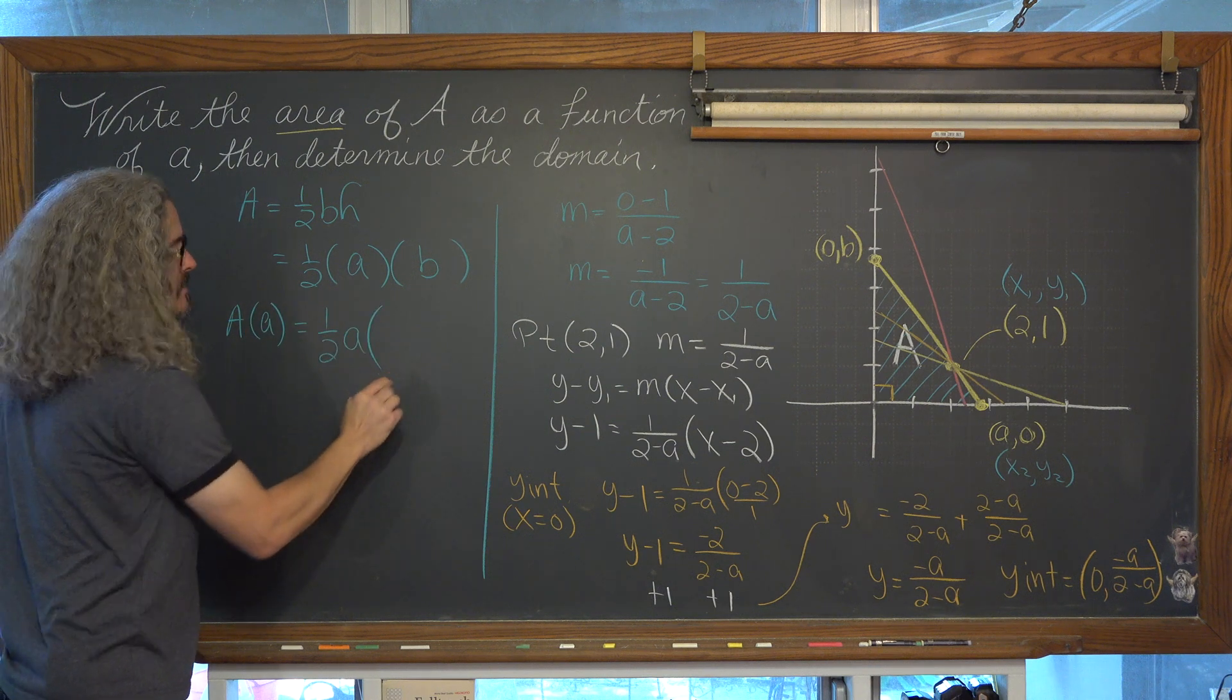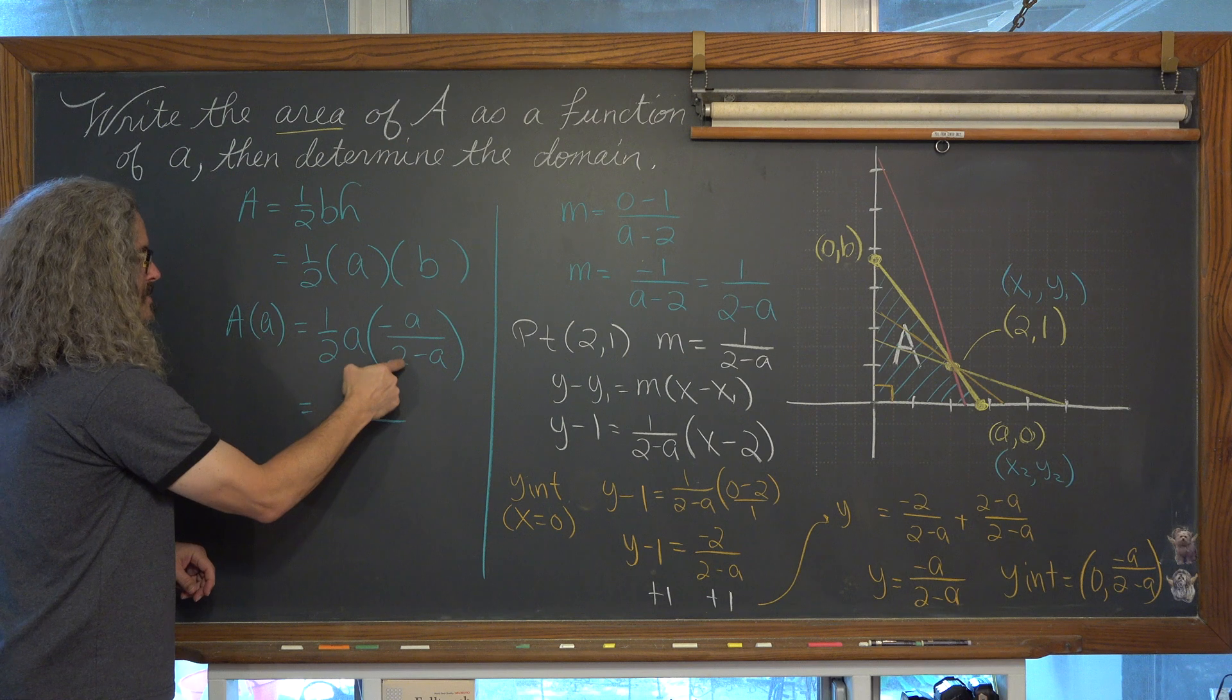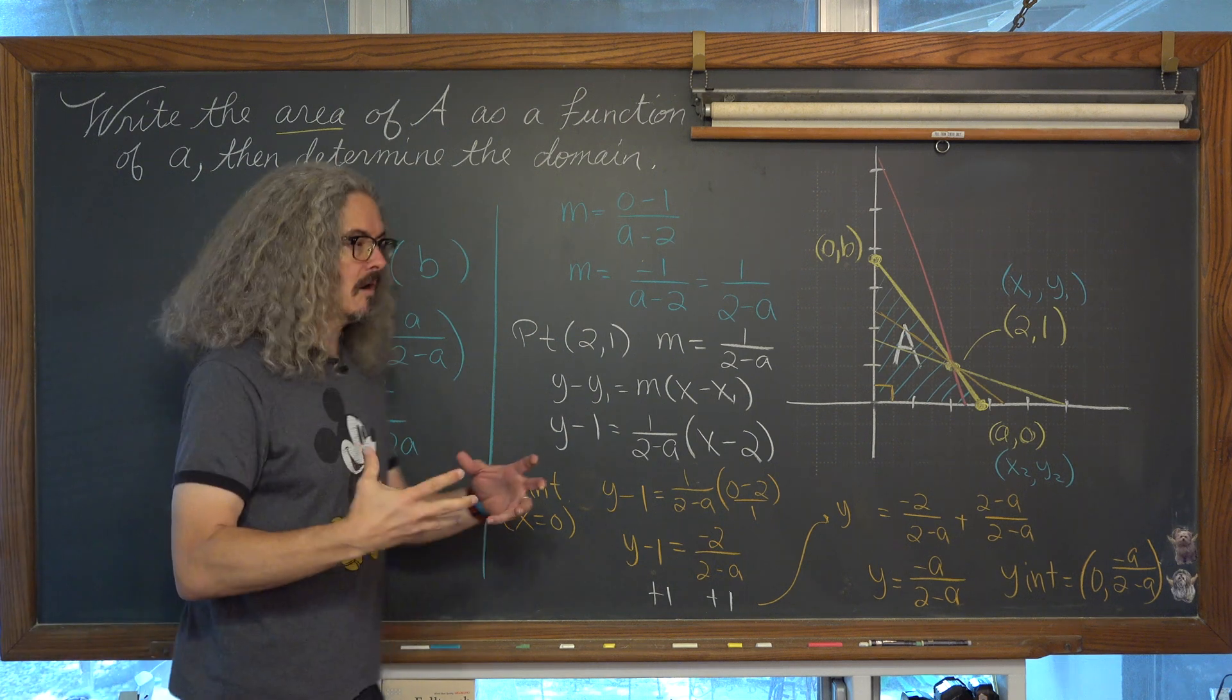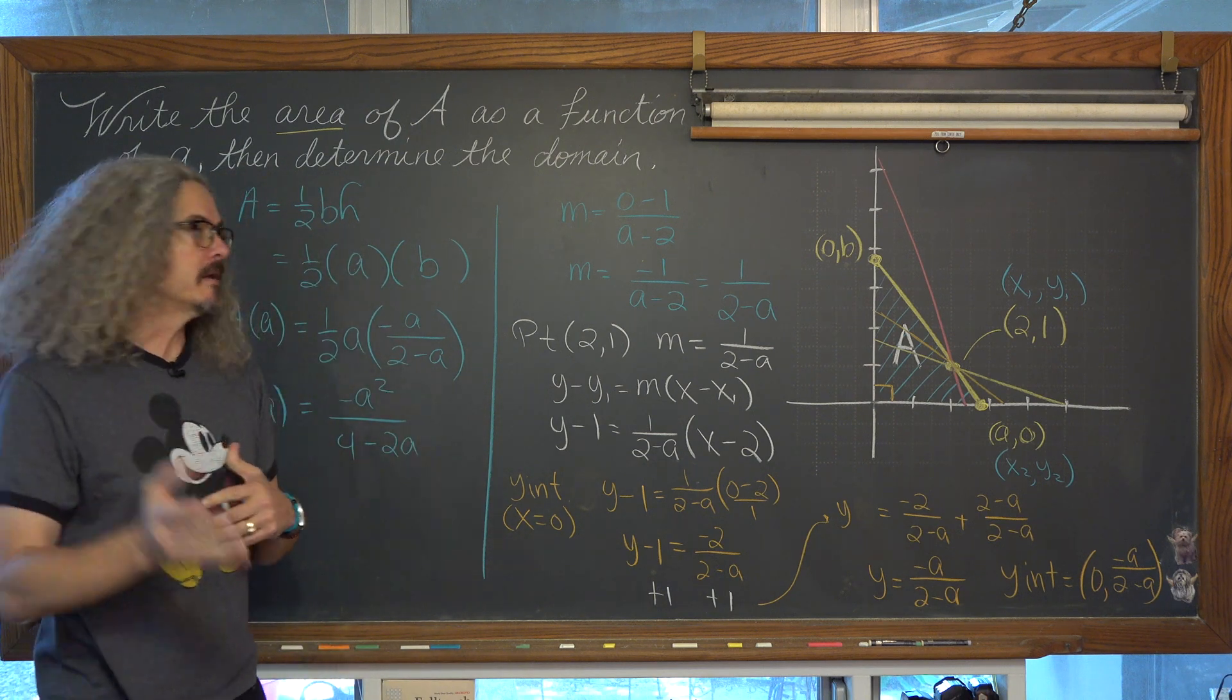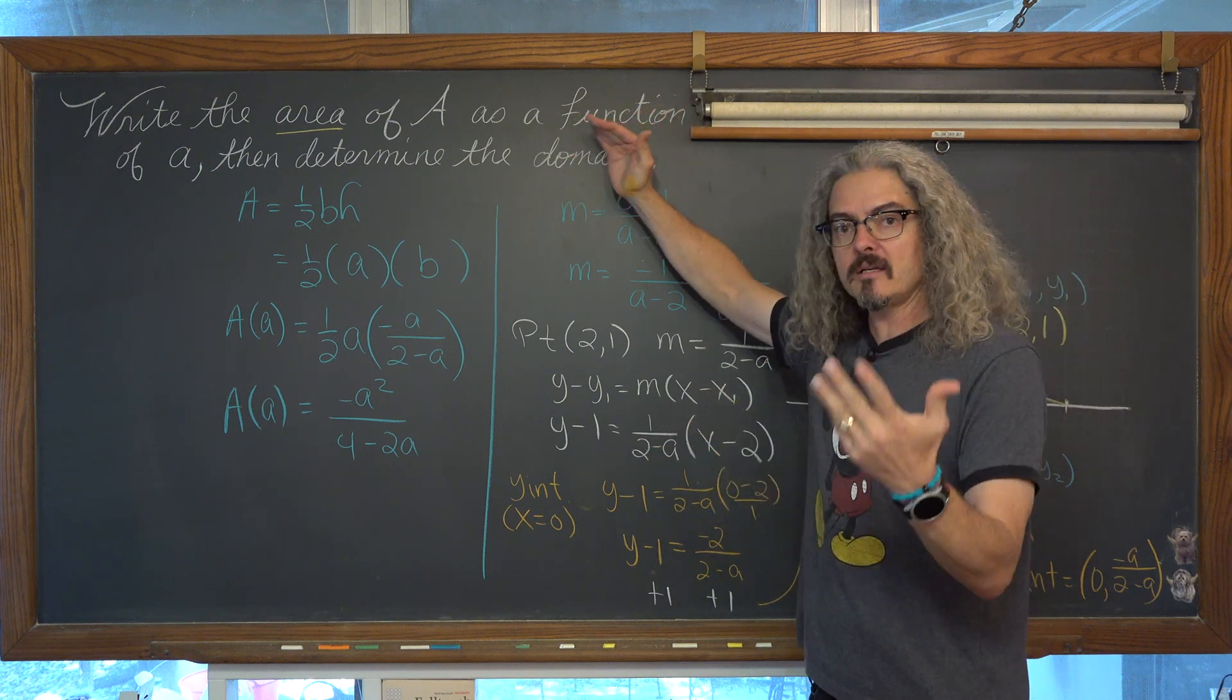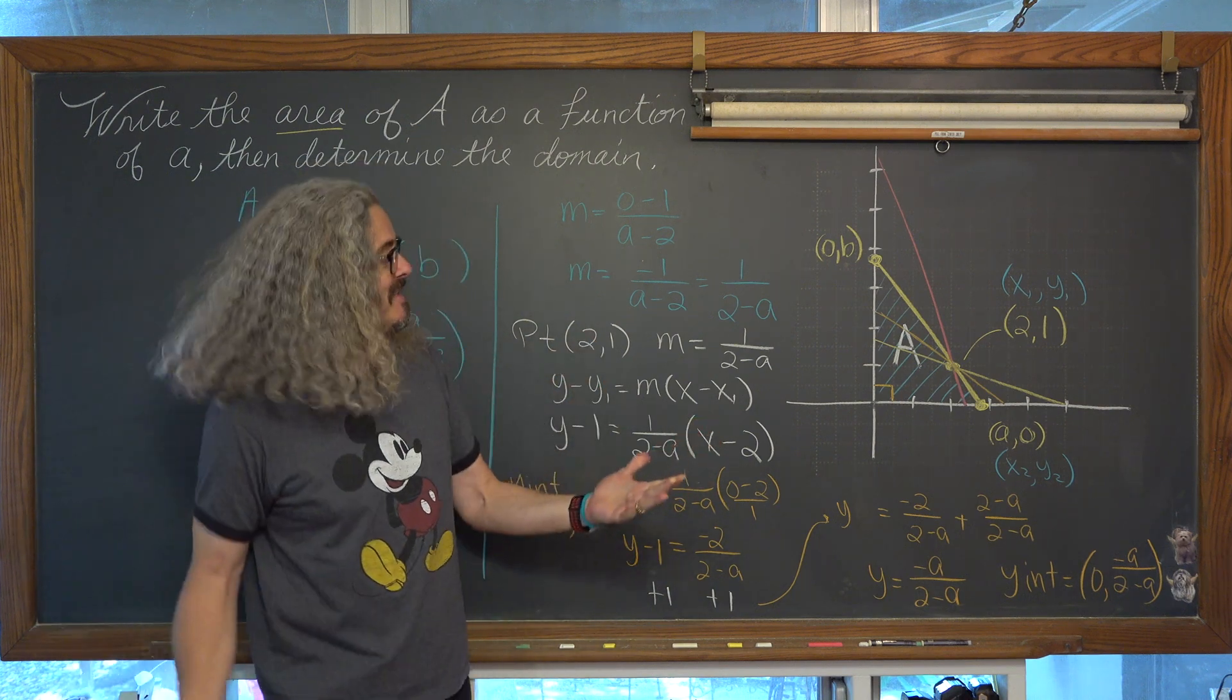So we have, now we can take out b and say that the area of that triangular region as a function of a is going to be equal to 1 half a times b, which is negative a over 2 minus a, giving us a final answer of a times negative a is negative a squared over 2 times 2, distributing that 2 in the denominator to the 2 minus a in the denominator. 2 times 2 is 4 minus 2a, and that is how we take our core concepts that we know of how to write the area of a triangle, and how to write the equation of a line, knowing that we need a minimum of point and slope, and tackle a pretty tough question like this, where we read something, it looks like geometry, and it is, but yet in the middle we need to realize that we need to make a connection to another math concept. And that is the end of my example.